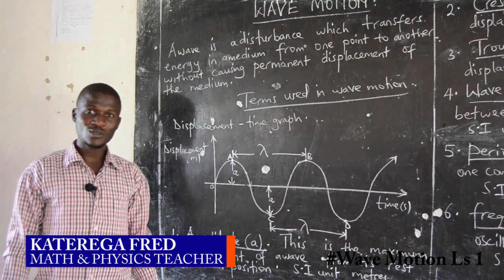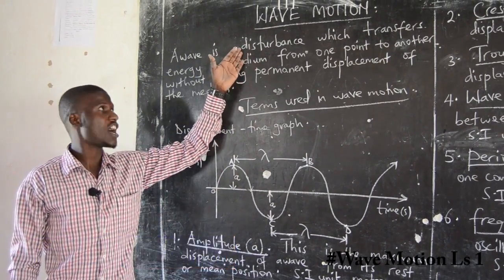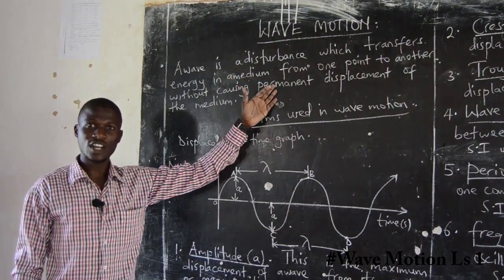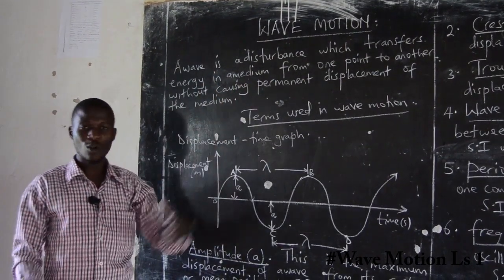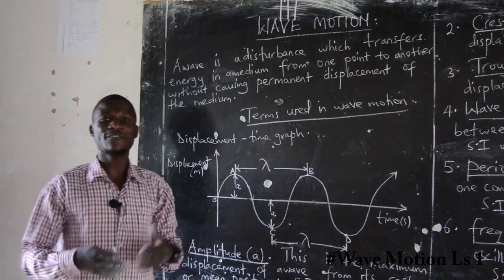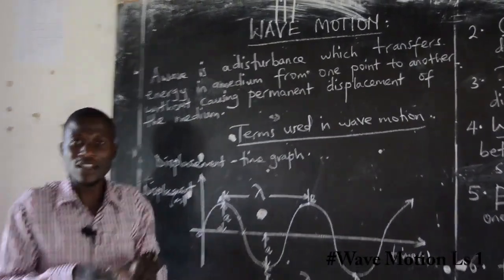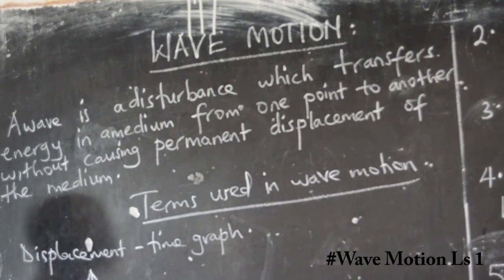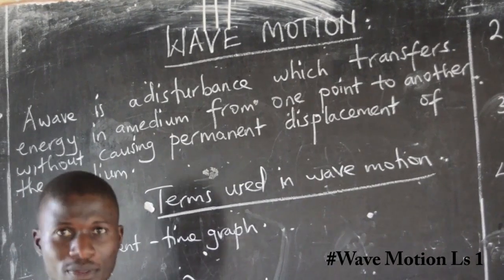Welcome to Seremba Online School. This is Ordinary Level Physics and our topic today is wave motion. My name is Kateri Gaffred. A wave is a disturbance which transfers energy through a medium from one point to another, but without causing permanent displacement of the medium.